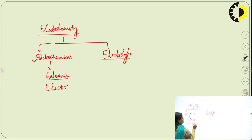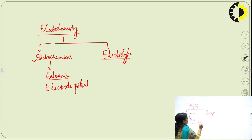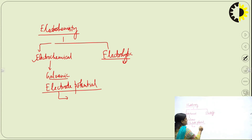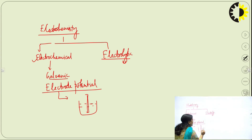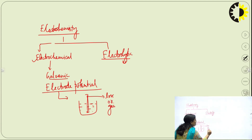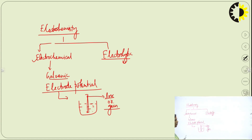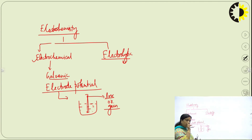What is electrode potential? If we dip a metal electrode into its solution, then it will either lose electrons or gain electrons. The tendency of an electrode to lose electrons is called oxidation potential, and the tendency of an electrode to gain electrons is called reduction potential. There are two terms: oxidation and reduction.